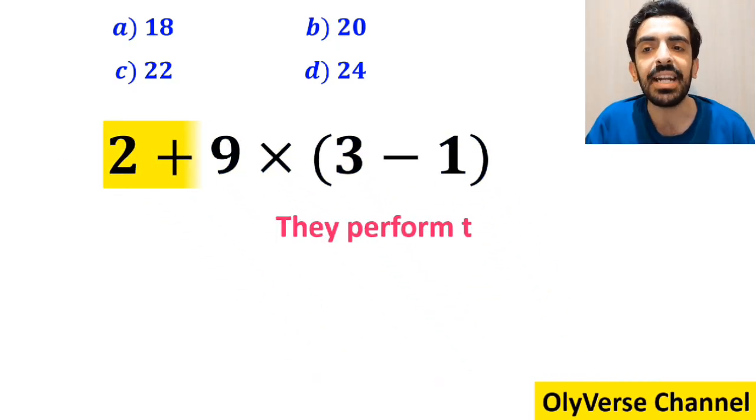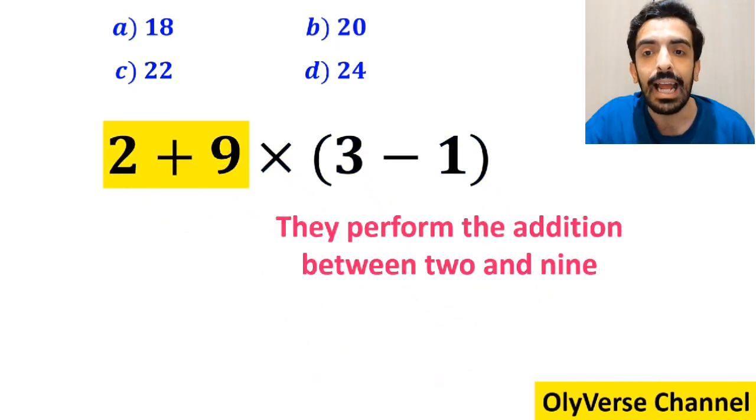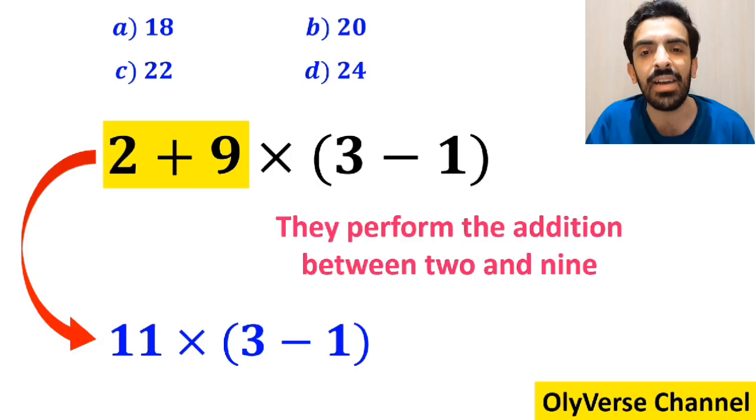Then they perform the addition between 2 and 9, simplifying this expression to 11 times 3 minus 1 inside the parenthesis.